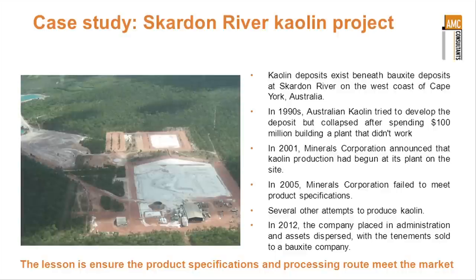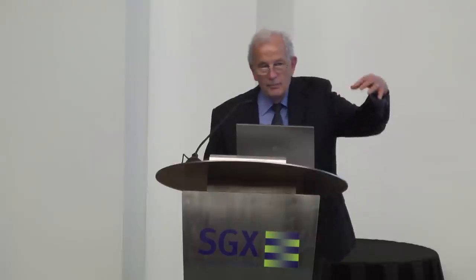Let's look at the case study at Skarden River, a kaolin project on the west of Cape York in northern Queensland in Australia. The kaolin deposits exist beneath bauxite in that area. You'd probably all be aware of the Weeper bauxite deposits. Skarden River is just a little bit further south than Weeper, and in the process of producing bauxite, it also produces a clay layer underneath. And this Skarden kaolin looked pretty attractive.